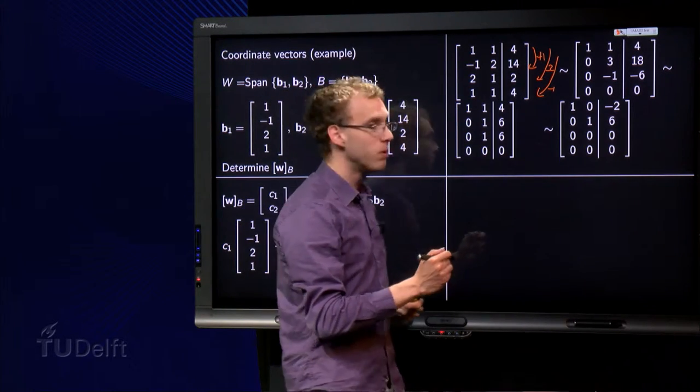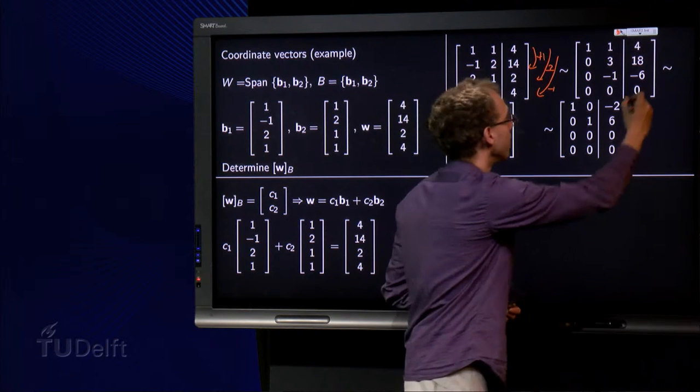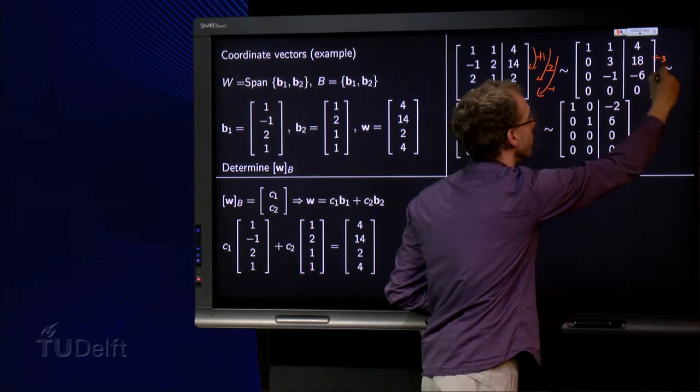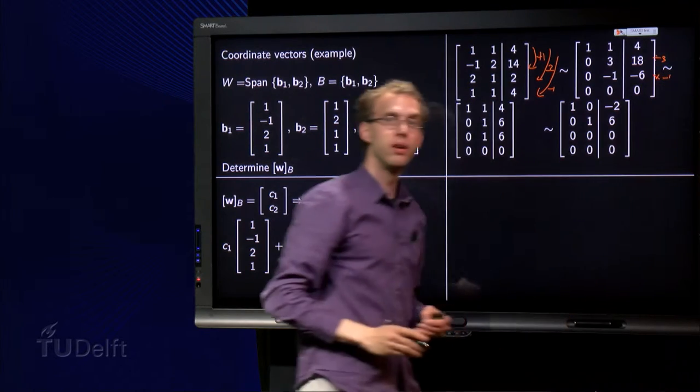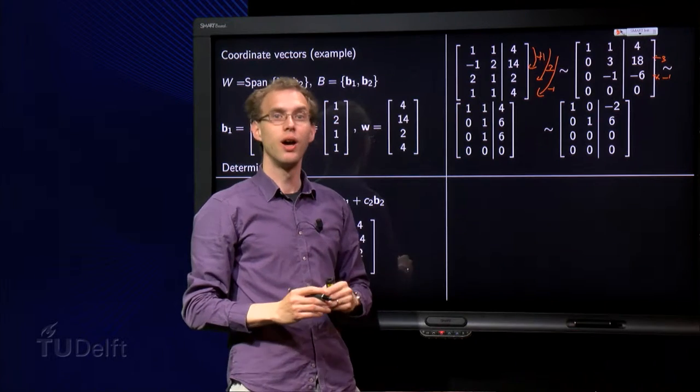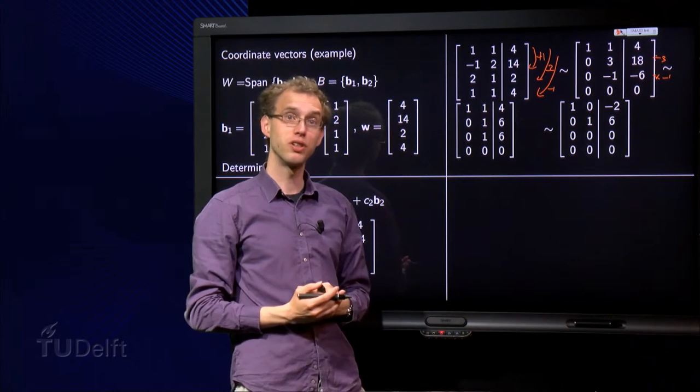And then we continue. Let's clean up some mess—we divide by 3 times minus 1 to clean up some mess over here. We get a 1, 6 and a 1, 6, and we see this row reduction works really nice.